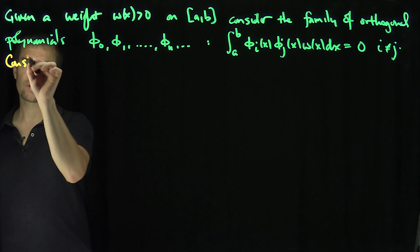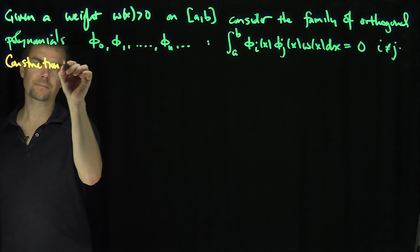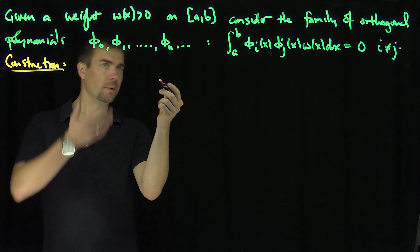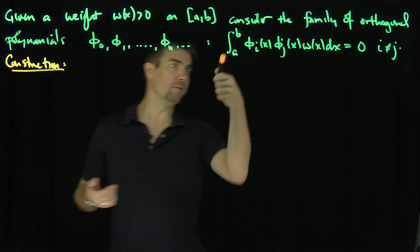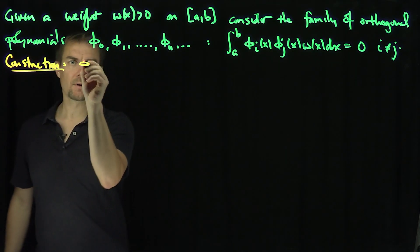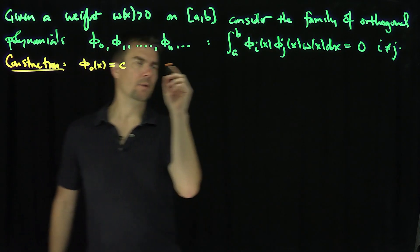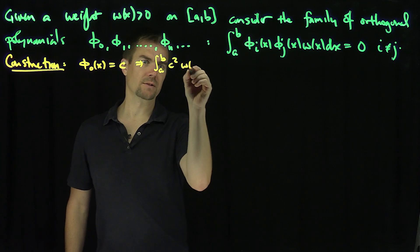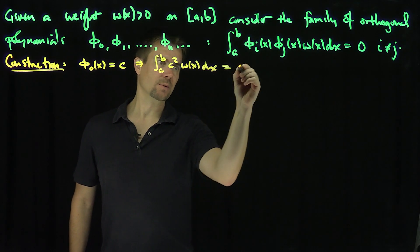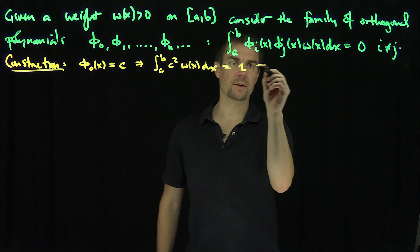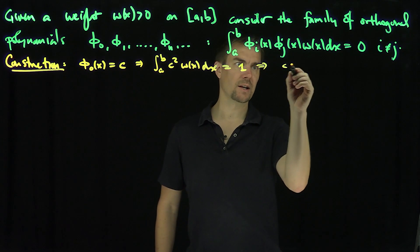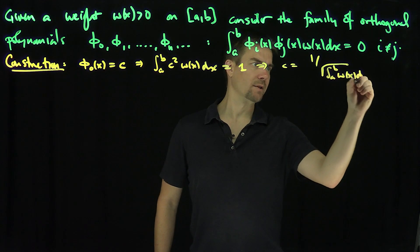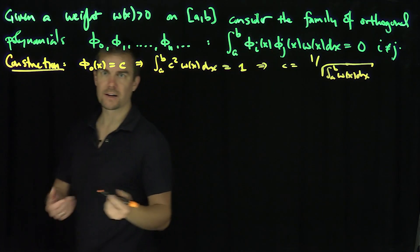So here's the construction procedure. How do you construct such things? Well, the first condition is you can just take φ₀ to be equal to 1 or a constant, and you can actually normalize it too. So φ₀(x) is just a constant c, and you would like that constant c to satisfy: the integral from a to b of c² w(x) dx equals 1 to normalize it. So c is 1 over the square root of the integral from a to b of w(x) dx. That's how you construct the first one, φ₀.